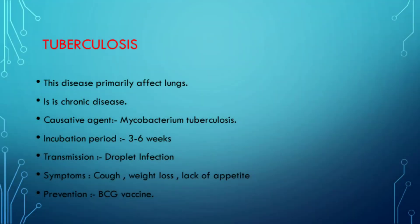Last is tuberculosis, that is TB. This disease primarily affects the lungs. It is a chronic disease. The causative agent is Mycobacterium tuberculosis. Incubation period ranges between 3 to 5 weeks. Spread of the disease depends upon the closeness of contact, extent of disease, and sputum positivity. Symptoms include cough, weight loss, lack of appetite, night sweating, fatigue, chest pain, etc. The BCG vaccine is used for prevention of tuberculosis.